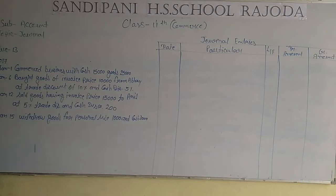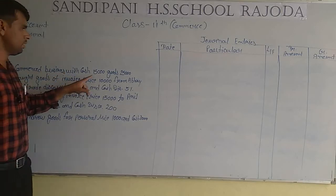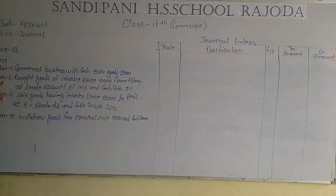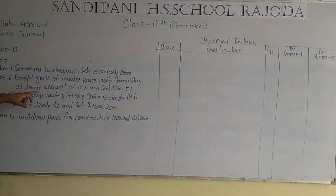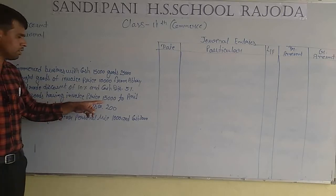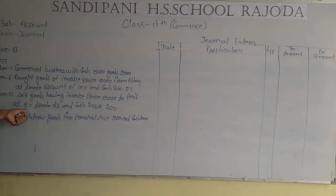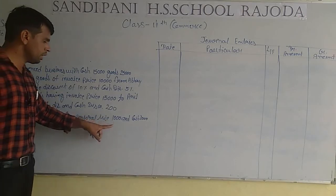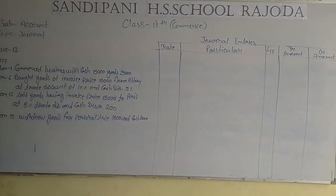Question number 13 has given 4 transactions. First, January 1st 2017: commenced business with cash and goods. January 6th: bought goods of invoice price 10,000 from Abhay at trade discount 10% and cash discount 5%. January 12th: sold goods having invoice price 15,000 to Anil at 5% trade discount and cash discount 200 rupees. January 15th: withdrew goods for personal use 10,000 and cash 2,000 rupees.